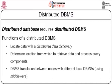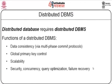Distributed databases require a distributed management system. Functions of a distributed DBMS include: locating data with a distributed data dictionary; determining the location from which to retrieve data and process query components; DBMS translation between nodes with different local DBMS using middleware; maintaining consistency with multiphase commit protocols; providing global primary control; being scalable to any number of sites; and ensuring security, concurrency, query optimization, and recovery in terms of major failures.